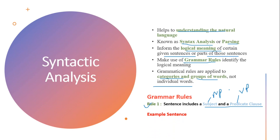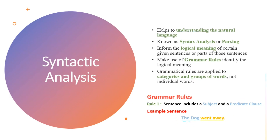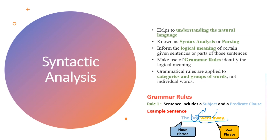Let's see an example sentence. 'The dog went away.' Here, 'the dog' is the noun phrase and 'went away' is the verb phrase, where the word 'dog' represents the noun and 'went away' represents the verb. On the basis of this, the sentence qualifies rule one. Similarly, there are many other rules that can be applied on a sentence given the requirement and the text condition.